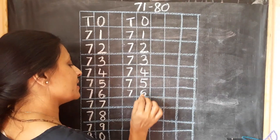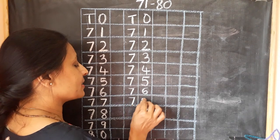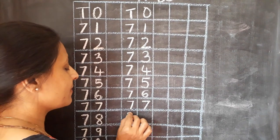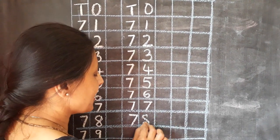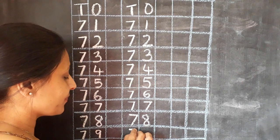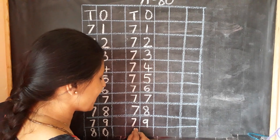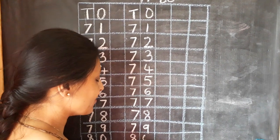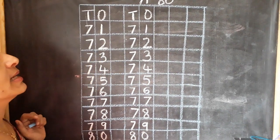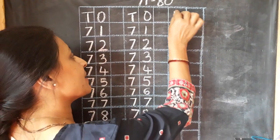76, 76. 77, 77. 78, 78. 79, 79. And what comes after 79? 80. 80, 80. So, now one more time I will write.